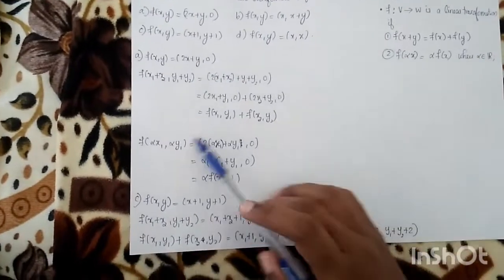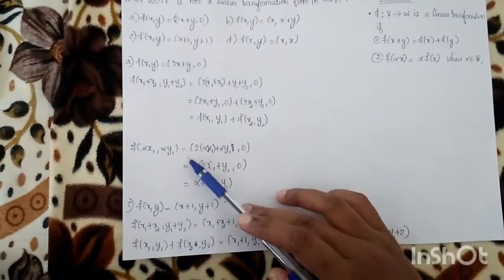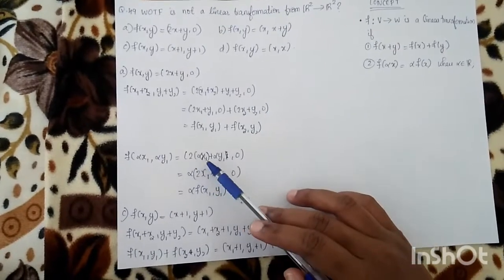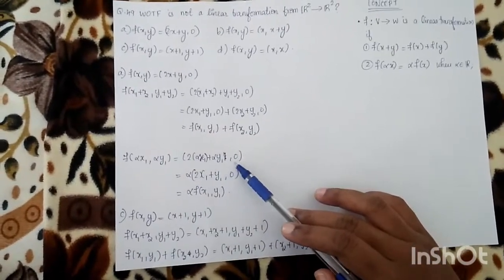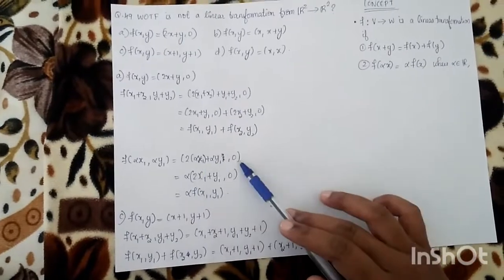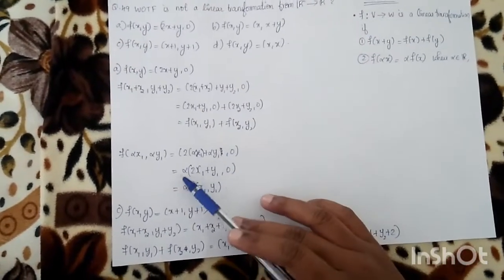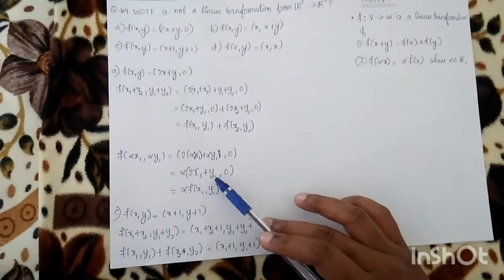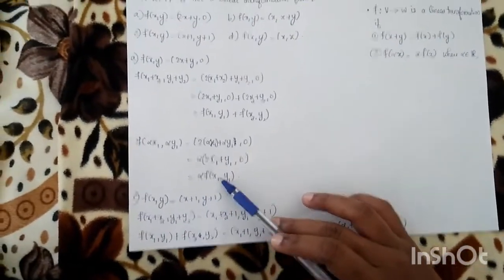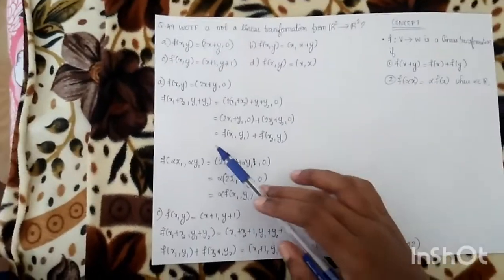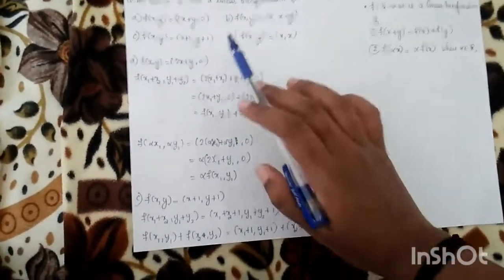For the second condition: f(αx1, αy1) = (2αx1 + αy1, 0) = α(2x1+y1, 0) = α·f(x1,y1). So the second condition is also satisfied. Therefore, the first option is a linear transformation.